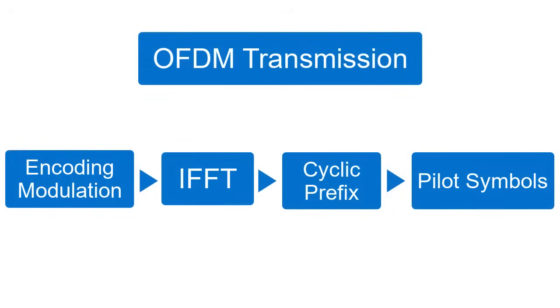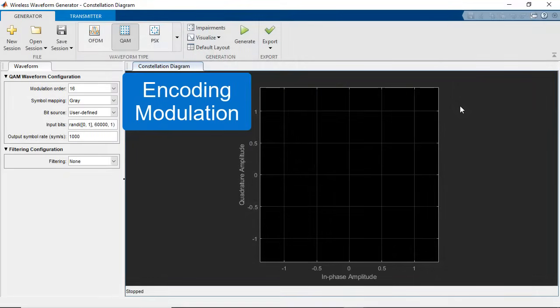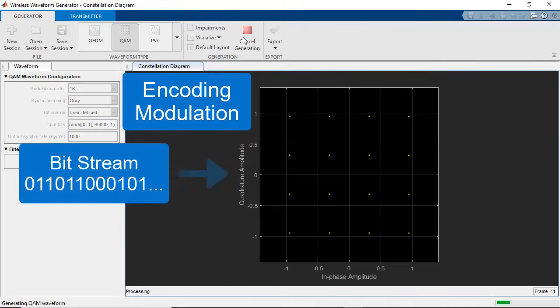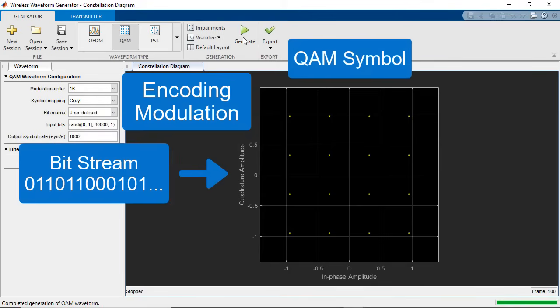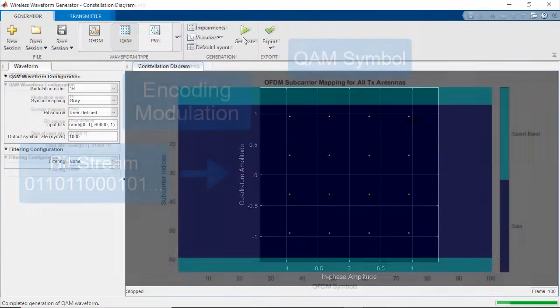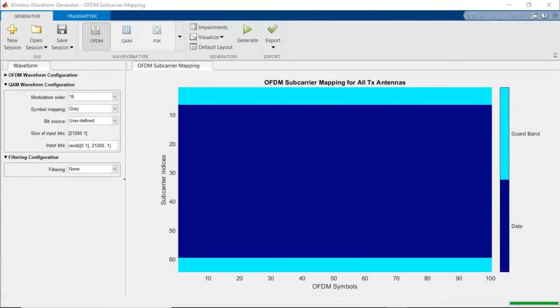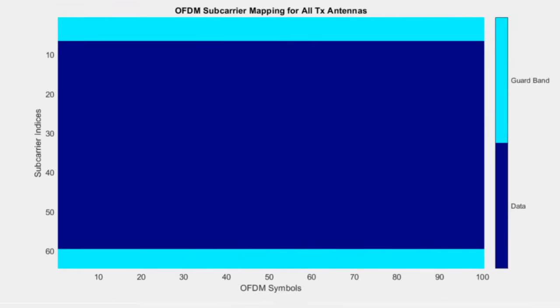OFDM waveform generation at the transmitter involves several key components. The information comes from higher layers as a bit stream. It is then encoded and modulated into symbols using a modulation mapper such as QPSK or QAM. The IQ samples are then aligned in a two-dimensional resource grid. The Y dimension represents the frequency domain, while the X dimension represents the time.